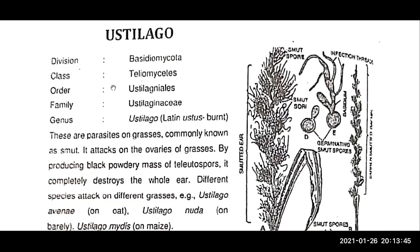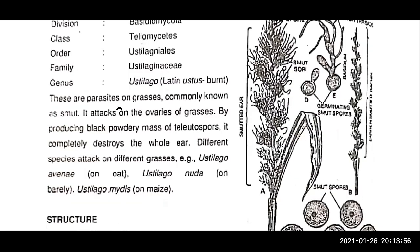Ustilago belongs to the division Basidiomycota, class Teliomyces, genus Ustilago. The Latin word means smut. These are parasites on grasses, commonly known as smut. It attacks the ovaries of grasses by producing a black powdery mass of teliospores. It completely destroys the whole ear.